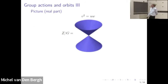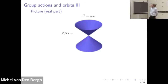Here's a picture. The orbit space is four-dimensional, complex dimension two, so that's too big to visualize. What I've done here is made a picture of the real points, but you can still see that the origin behaves differently from the other points — it's a singular point.